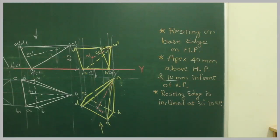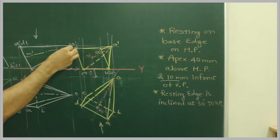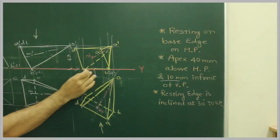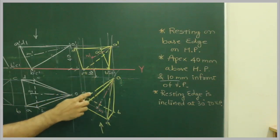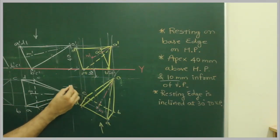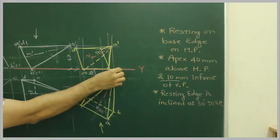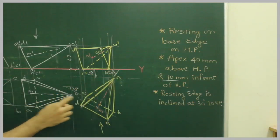So we have satisfied all the conditions. First, apex 40mm above the XY line. Here 10mm in front of the XY line, in front of VP. And this base edge, we see which is inclined at 30 degrees. So we have taken this OM inclined at what angle, 60 degrees. And it is resting on its base edge on HP.